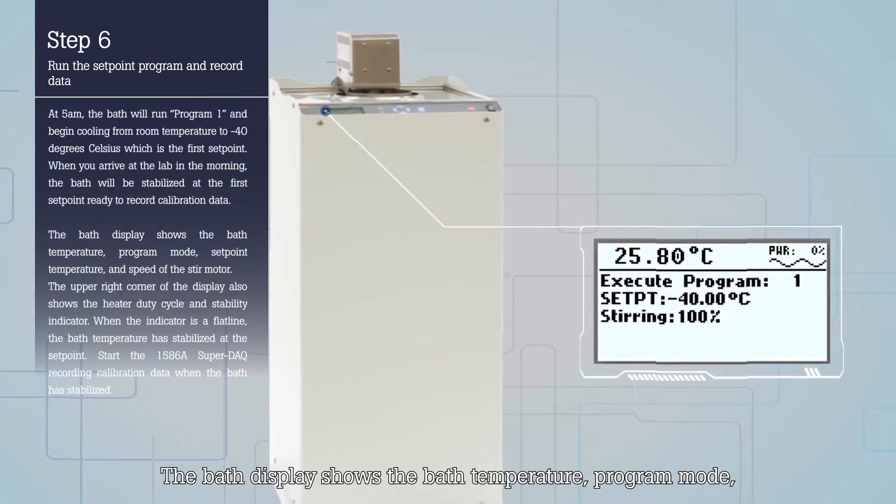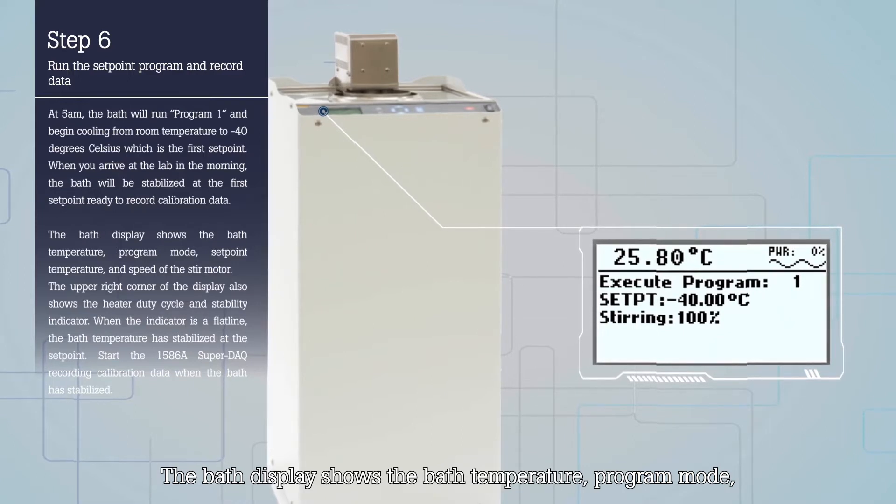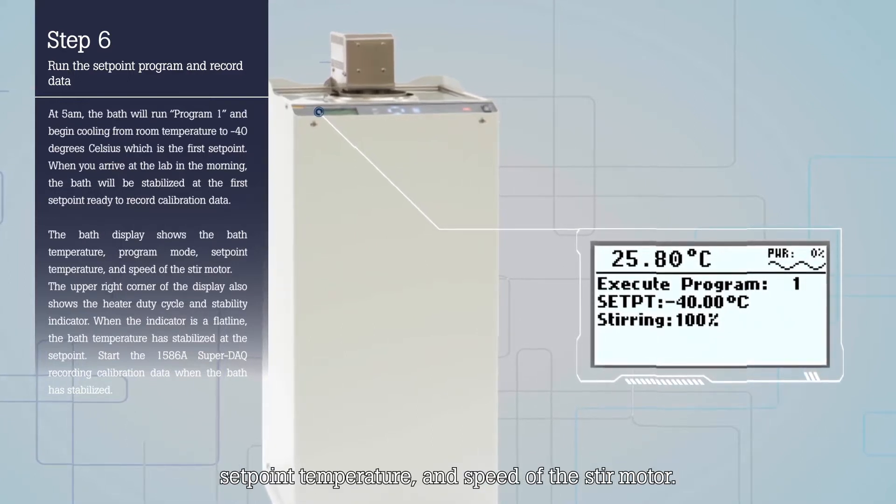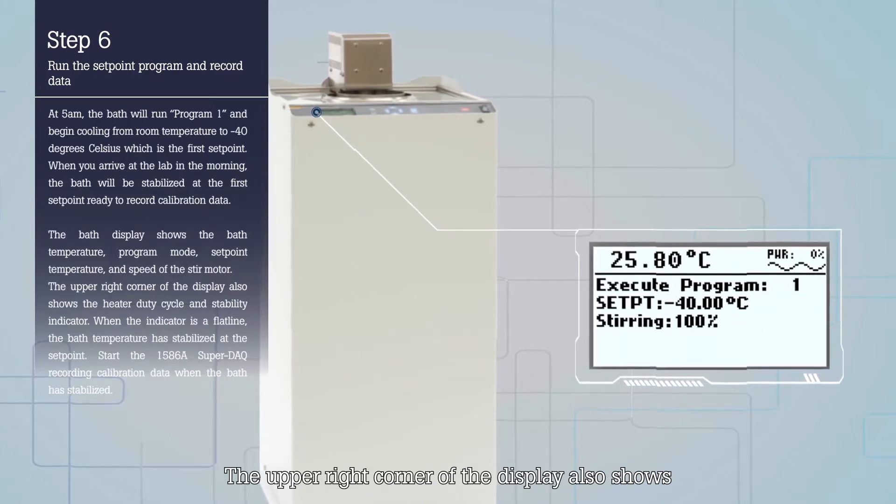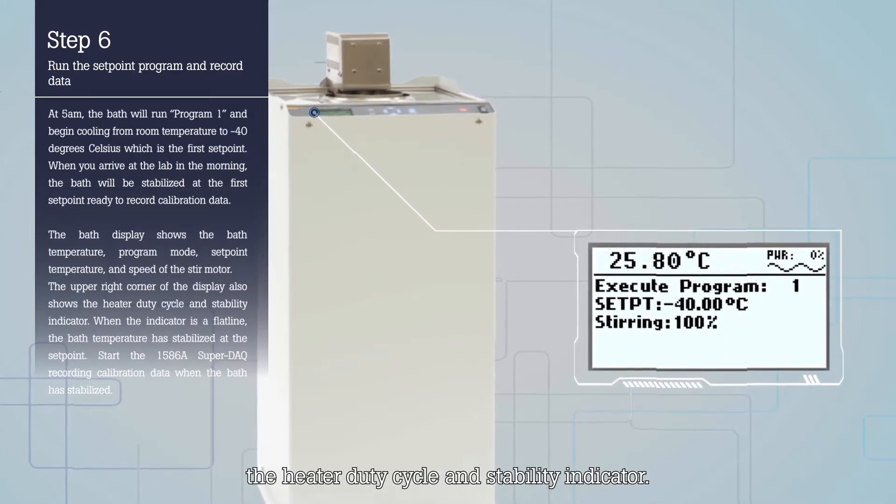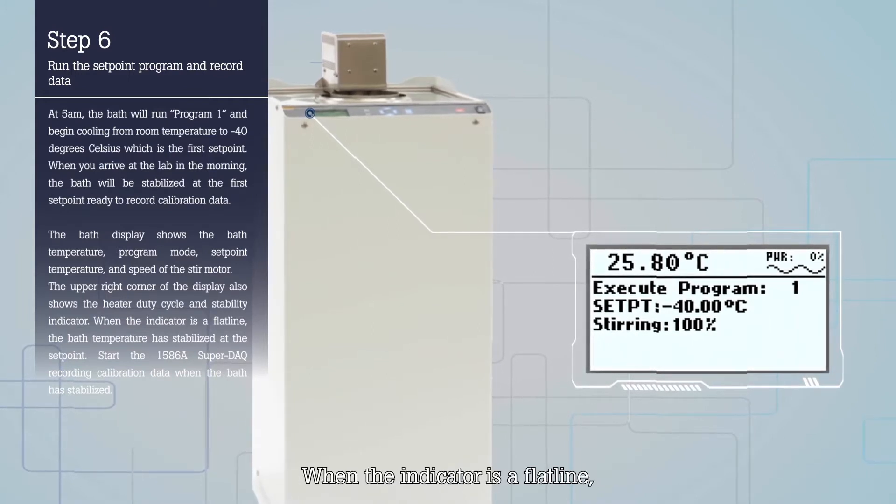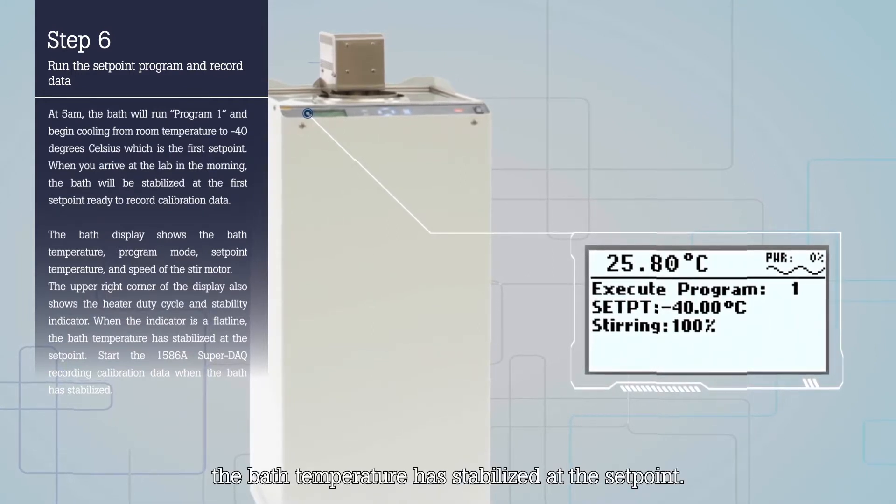The bath display shows the bath temperature, program mode, set point temperature, and speed of the stir motor. The upper right corner of the display also shows the heater duty cycle and stability indicator. When the indicator is a flat line, the bath temperature has stabilized at the set point.